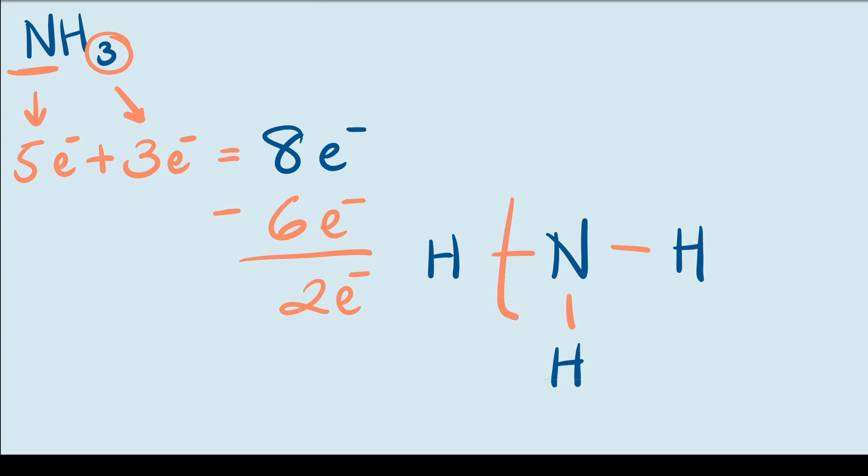However, the nitrogen atom is missing a pair of electrons in its octet. So we can add that lone pair over here giving it eight valence electrons. So now we've used up all of our electrons and all the octets have been filled. So we're basically done. This is the Lewis dot structure for ammonia.